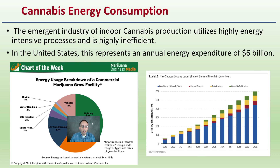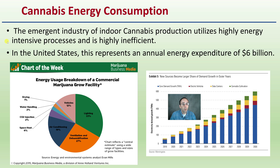First, cannabis energy consumption. The emergent industry of indoor cannabis production utilizes high energy intensive processes and is highly inefficient overall. In the United States, this represents an annual energy expenditure of about $6 billion. What we're seeing here is the projected electricity demand from 2019 to 2030 — core demand growth, electric vehicles, data centers, as well as cannabis cultivation — showing the anticipated great increase in cannabis cultivation regarding power consumption.